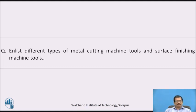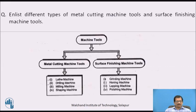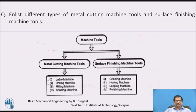I hope you might have written the answers of this question. The answer is: machine tools are broadly classified under metal cutting machine tools and surface finishing machine tools. Metal cutting machine tools are lathe machine, drilling machine, milling machine, and shaping machine, whereas surface finishing machine tools are grinding machine, honing machine, lapping machine, and polishing machines.